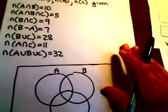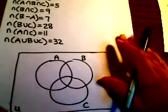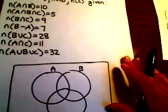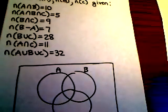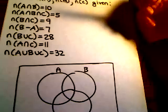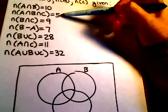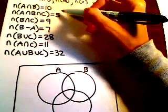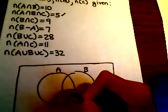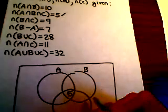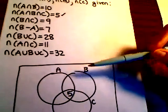All right, so whenever you're doing something like this, you always need to start with the intersection of all three sets, if it's given to you. And that's given to us right here. So that is the element 5, or number 5. So we're going to put 5 right there. That's the intersection of, this is C right here. It's the intersection of all three.